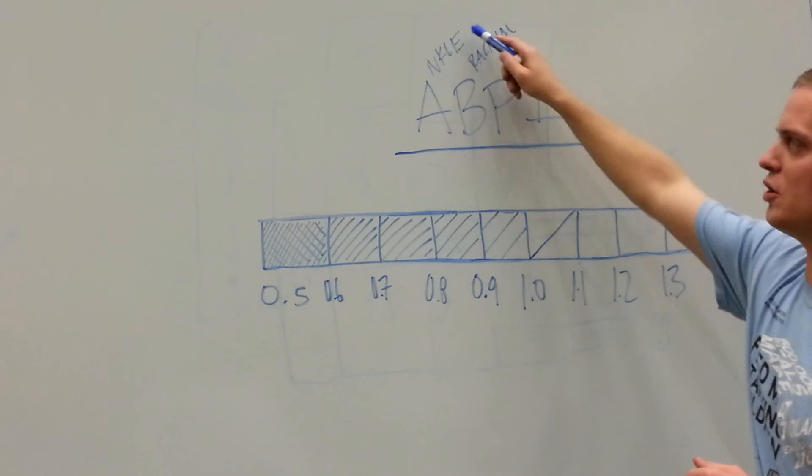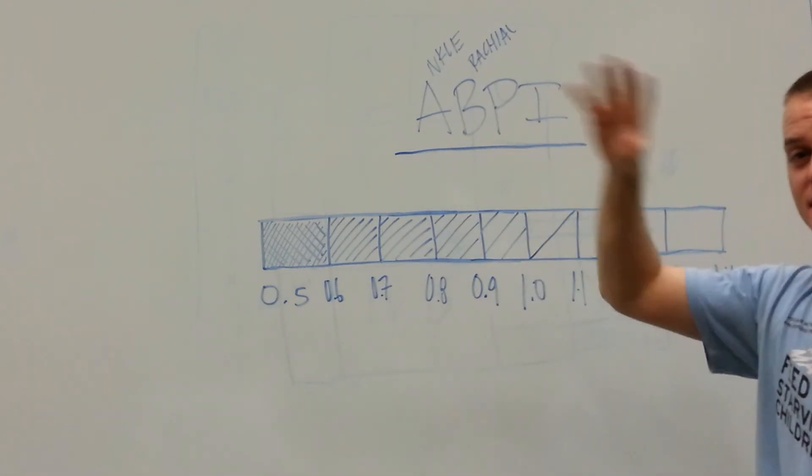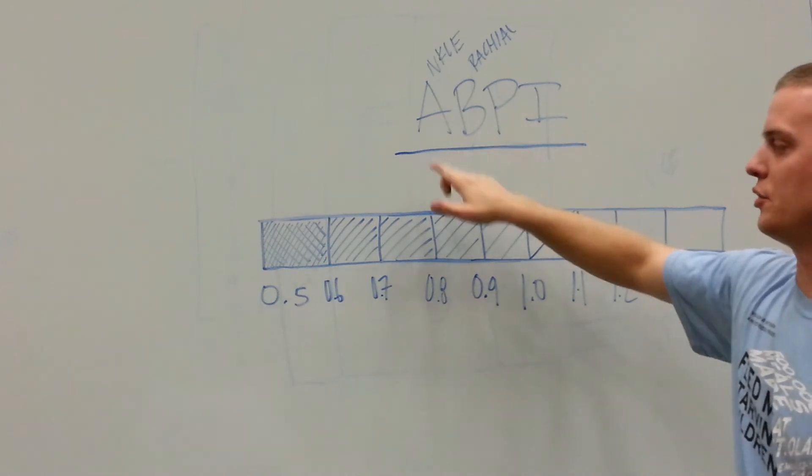What you do is take your blood pressure, those systolic blood pressures, the one that's on top of the fraction, and you put them in a ratio or divide them.